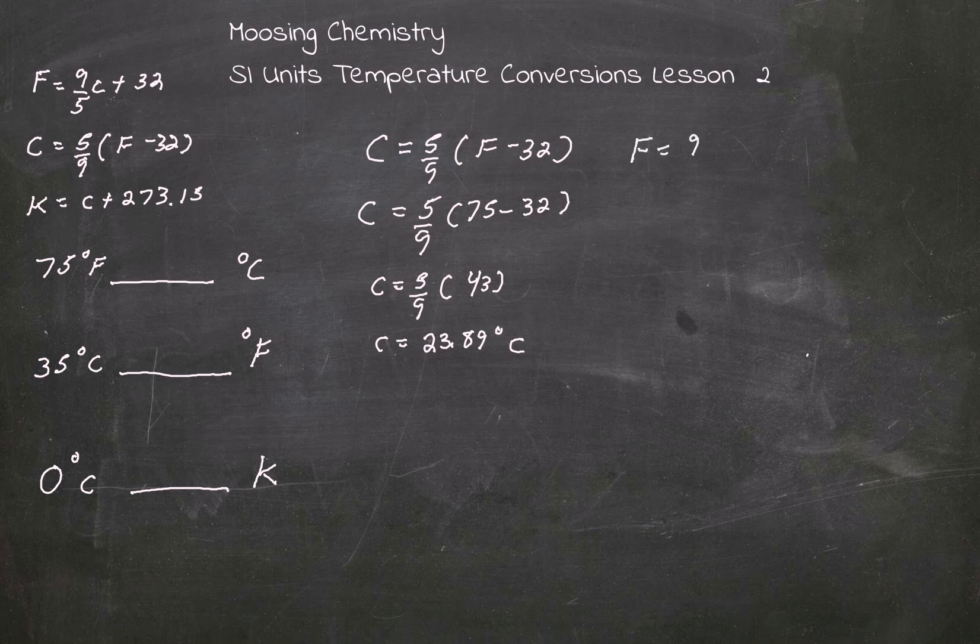F equals 9 over 5 C plus 32. So F equals 9 over 5 times 35 plus 32.